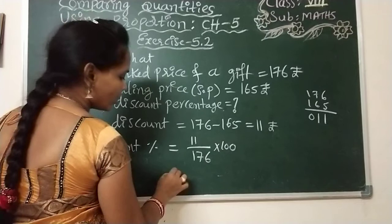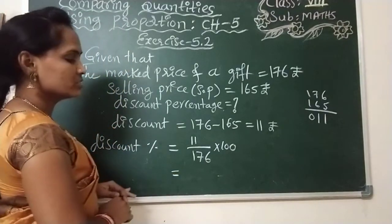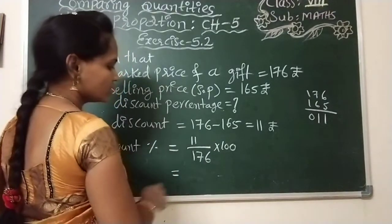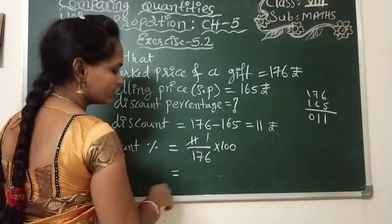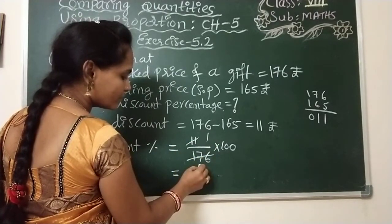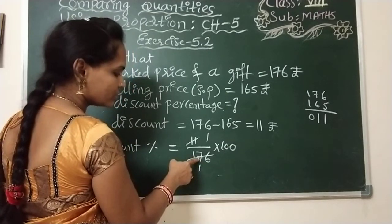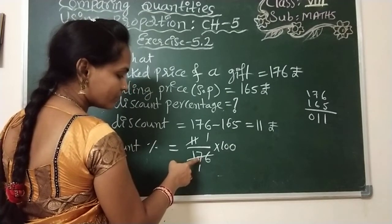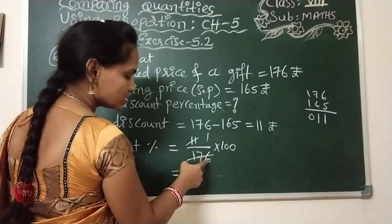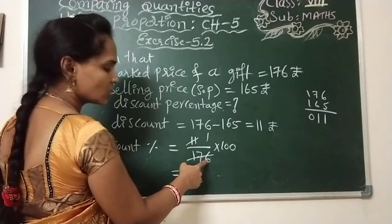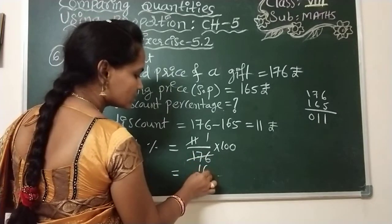Now if any cancellation is possible, you can do the cancellation. See here, with 11 table I am doing: 11 once is 11, 11 into 16 is 176. So we can cancel: 11 once is 11. After cancellation, it will be 6. So 11 into 6 are 66. This becomes 1 by 16 into 100.